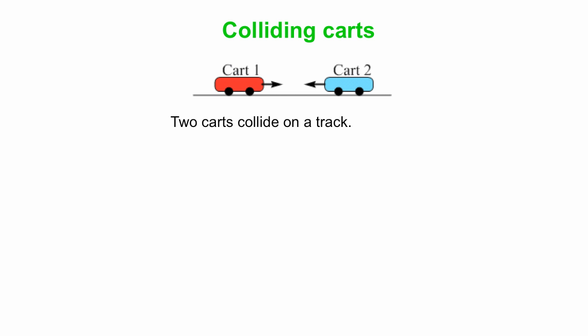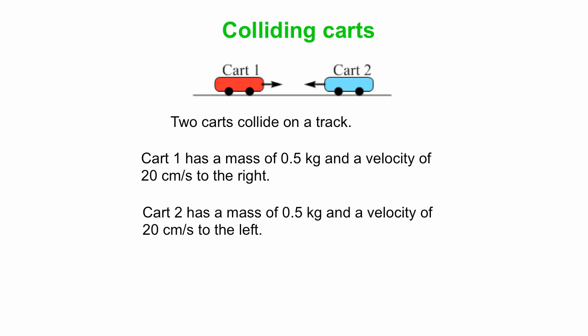Let's think of how that works for two carts on a track. Here's cart one and cart two. They're coming together and they're about to collide. Cart one might have a particular mass, 500 grams or half a kilogram, and a velocity of 20 centimeters per second to the right. Cart two is kind of a mirror image of that - similar mass, same mass in fact, and a velocity of the same size, just in the opposite direction. What's the net momentum of this two-cart system?